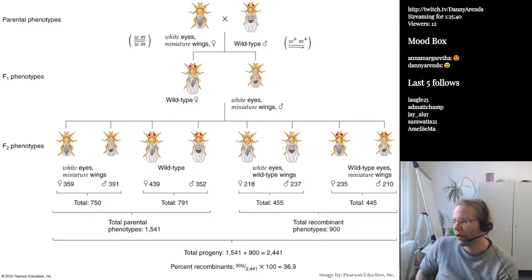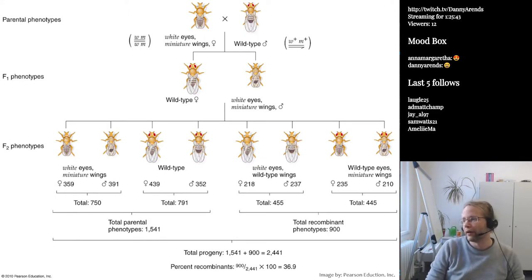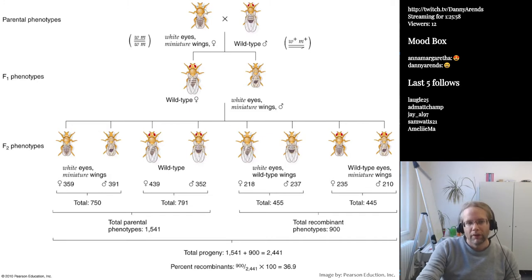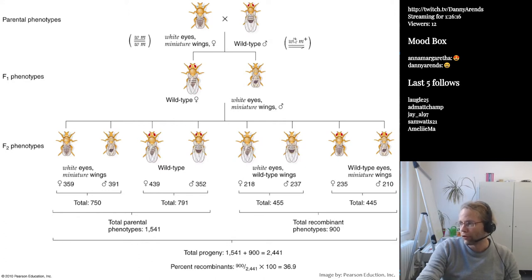Here we see an example of an inheritance diagram from Morgan — a restyled version, since the original was drawn by hand. The experiment we just showed involved females who have white eyes and miniature wings, so they have a W and M gene on one chromosome and a small W and small M on the other. We have wild-type males with a W-plus allele, meaning they have normal eyes and normal wings. The bar underneath indicates the Y chromosome, so they are hemizygous — they only have one copy.